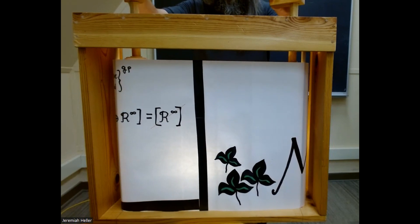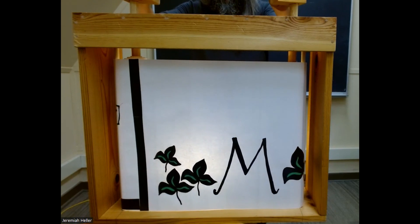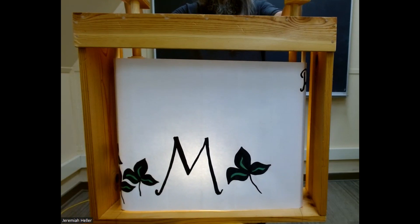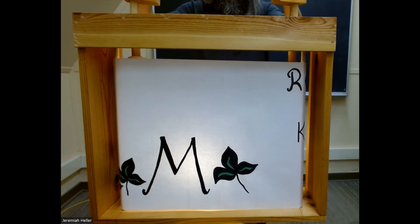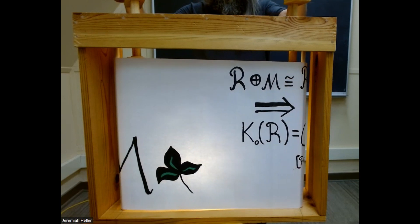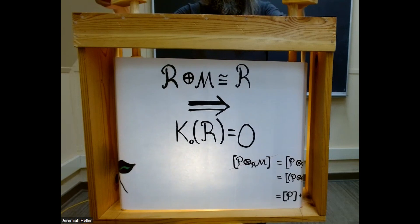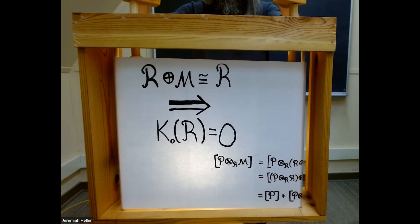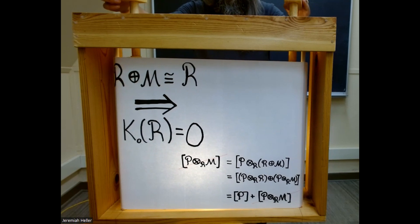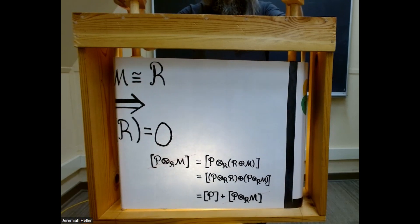Any good swindle contains a grain of truth. Let M be a finitely generated R-module such that R plus M is isomorphic to R. We saw that the infinite rank free R-module R-infinity satisfies this isomorphism — that was the swindle. But now we only allow M to be finitely generated. Rings with this property are called flask. No such module exists for most rings. Flask rings have vanishing K-theory, essentially for the same reason as in the swindle. This vanishing holds for all the K-groups.